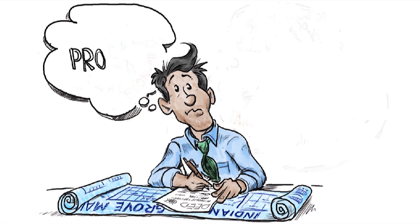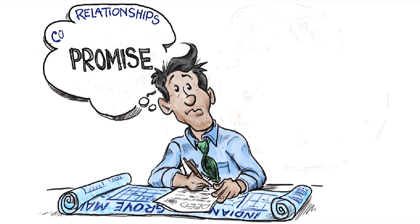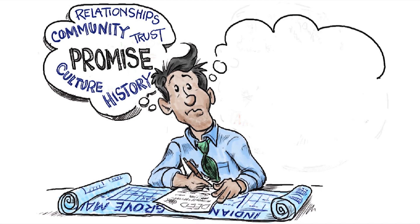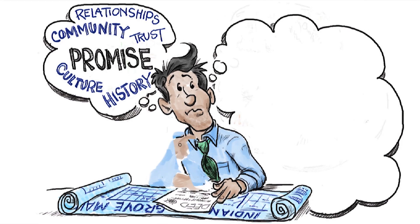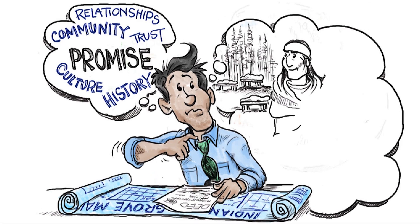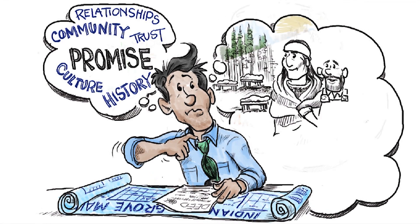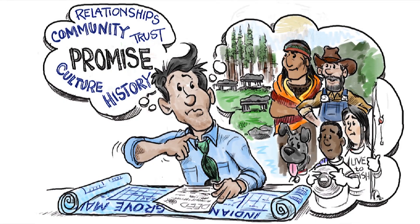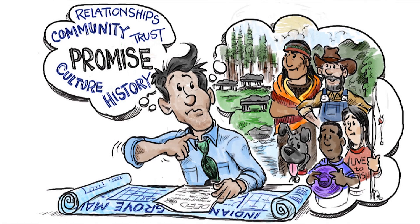What choices best advance the overall good of the community in which I live? The policy choice made previously to protect the land respected human connections to natural systems and was sensitive to the culture and history of a minority group. Affirming that decision helps all people in the community maintain trust in government.